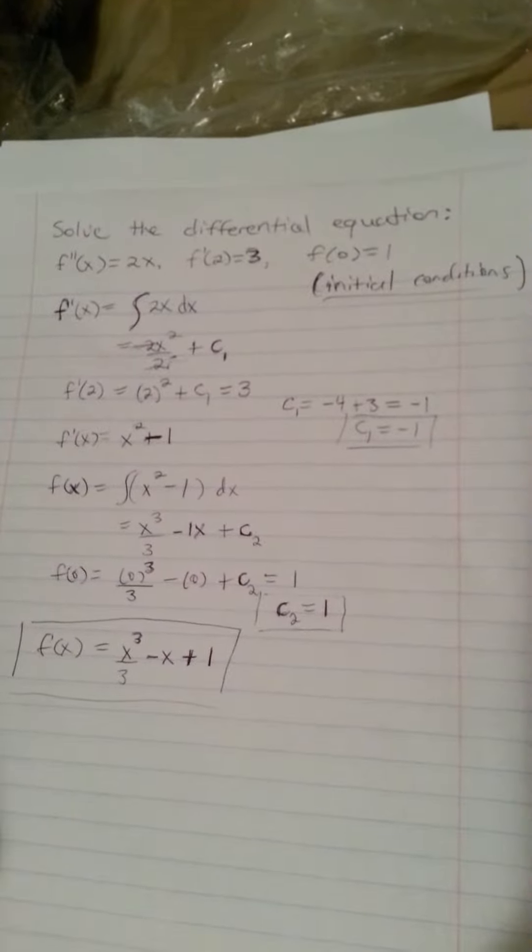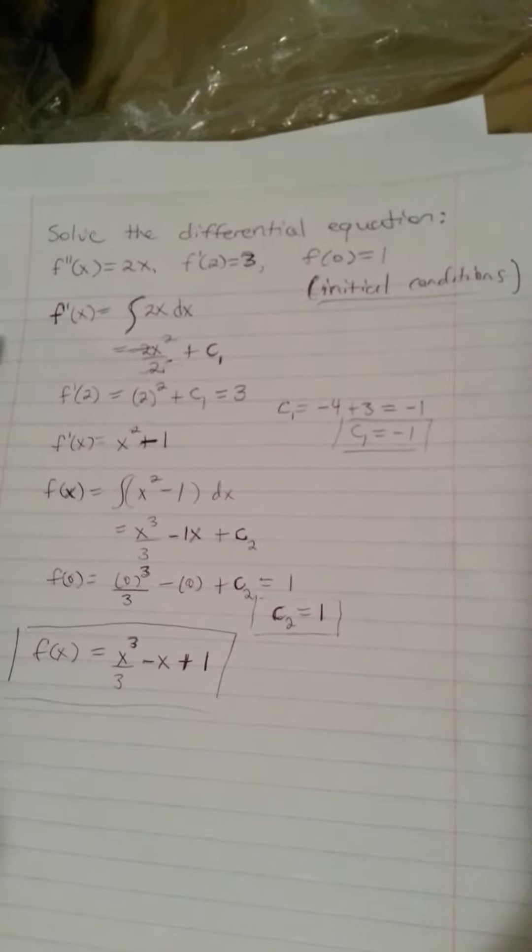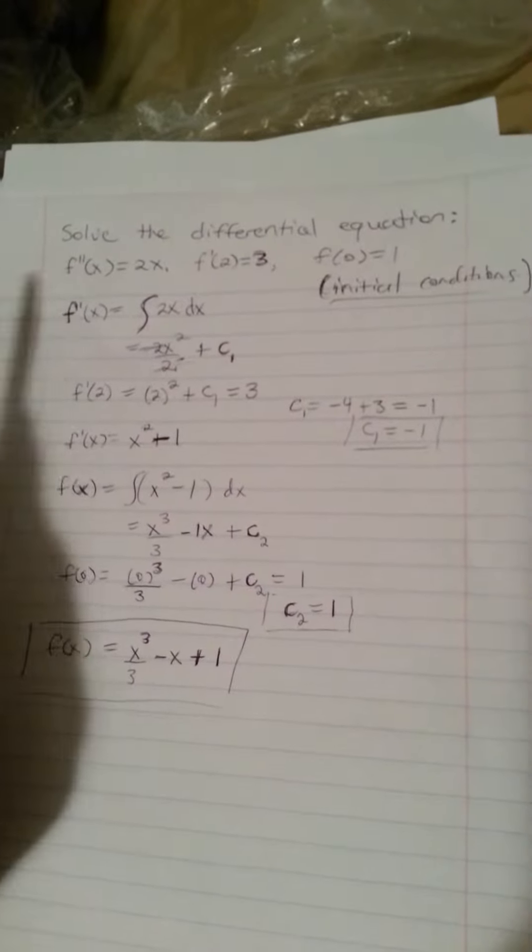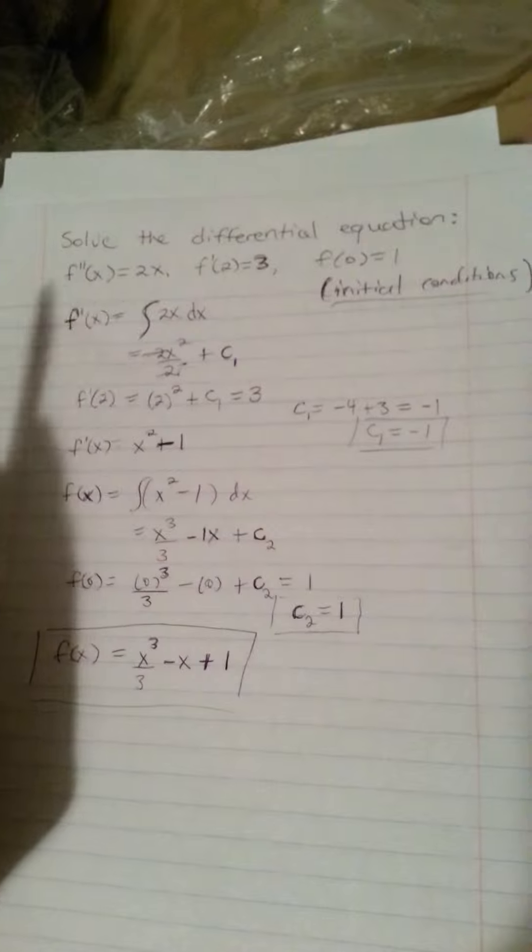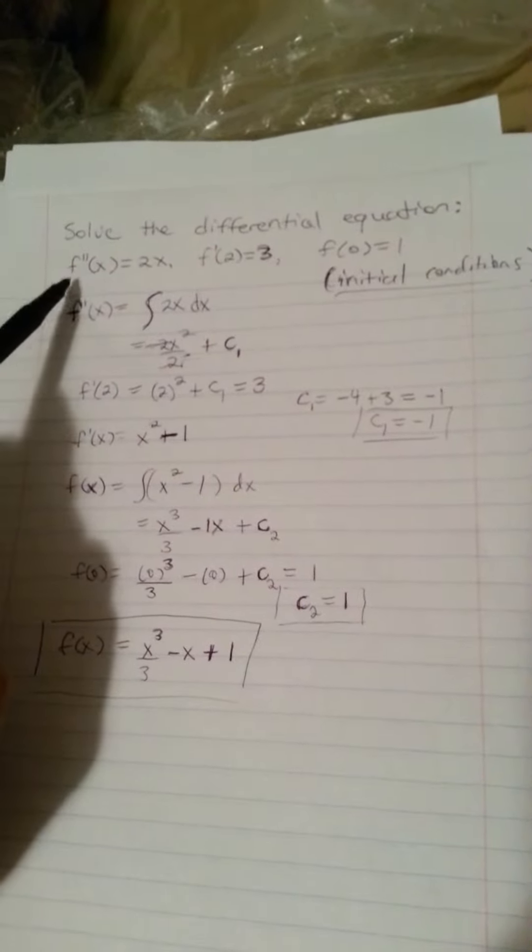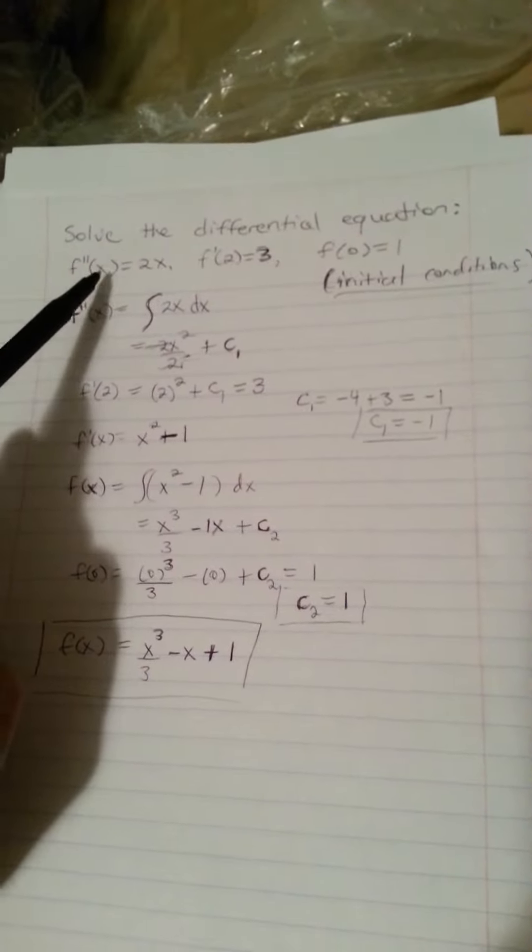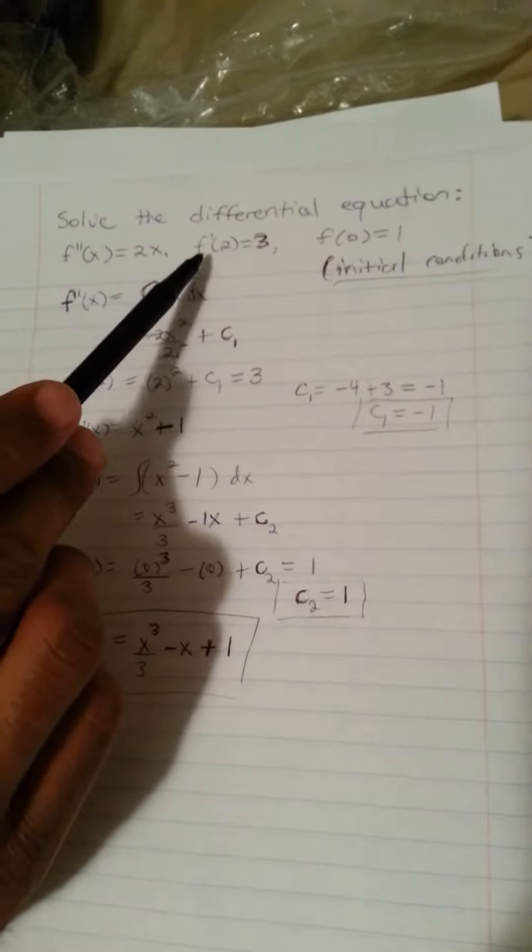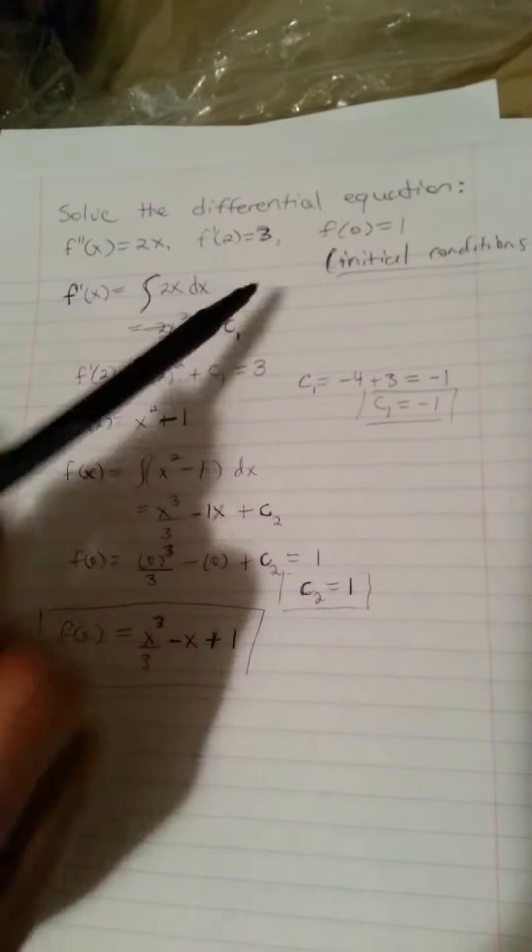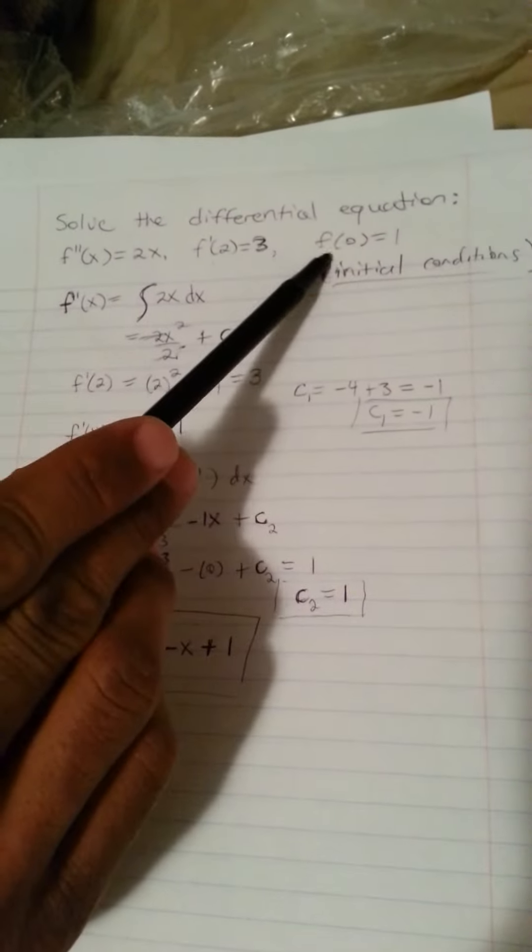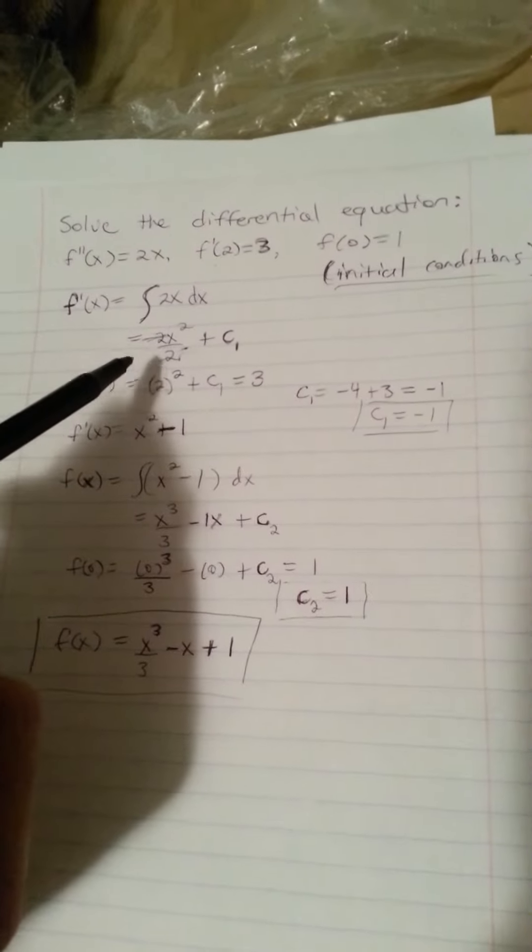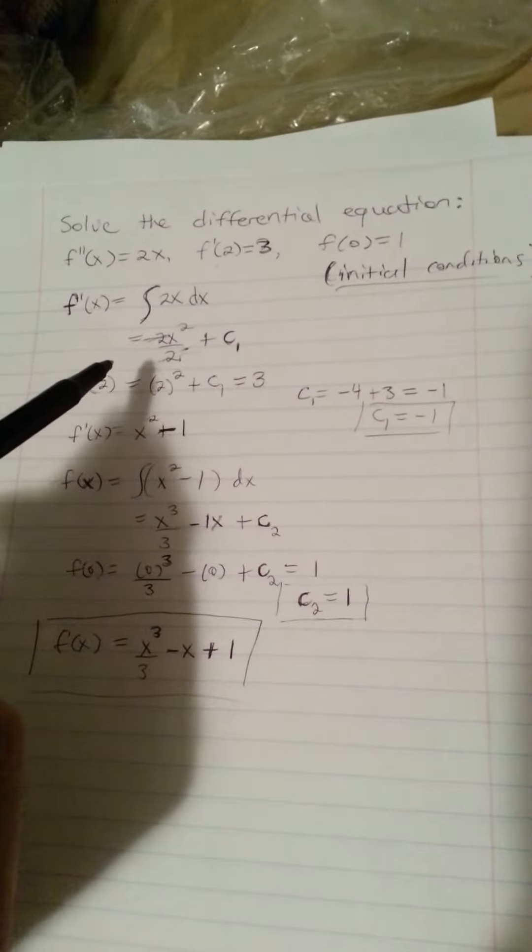So we have this problem here where we have to solve the differential equation. We are given these conditions where we have the second derivative of f of x, which is equal to 2x. Then we have f prime of 2 equal to 3, and then we have f of 0 is equal to 1. So with these conditions, we will be able to find this differential equation.